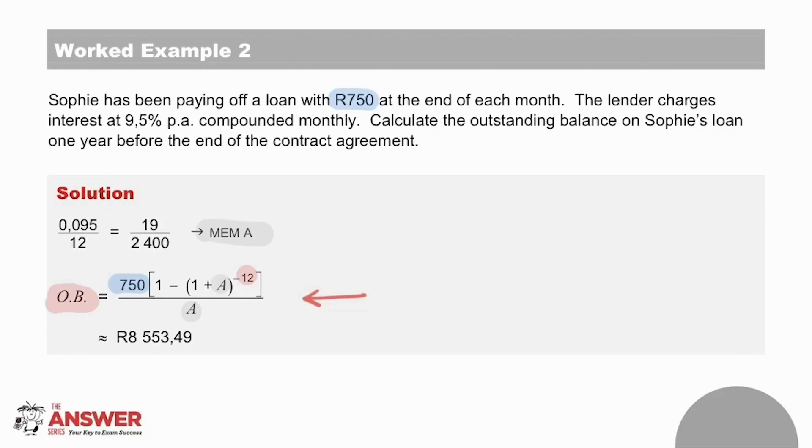one year before the completion of the contract agreement. In this example, the amount owing is 8,553 rand and 49 cents.